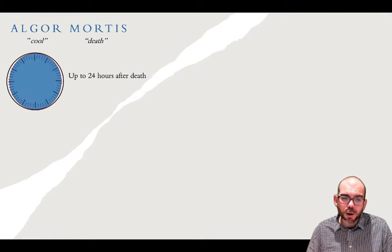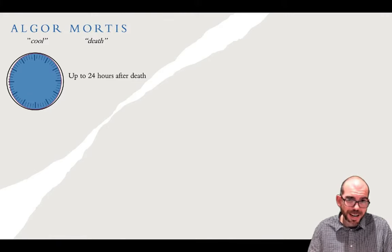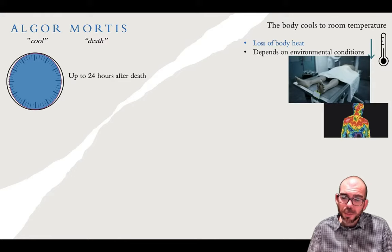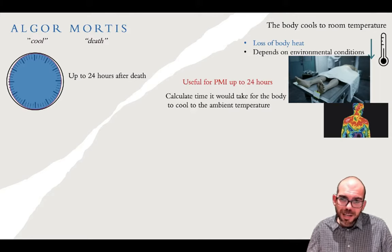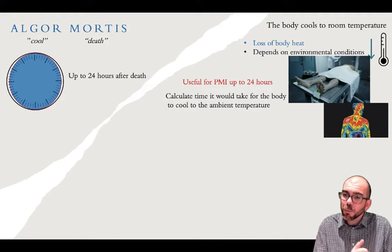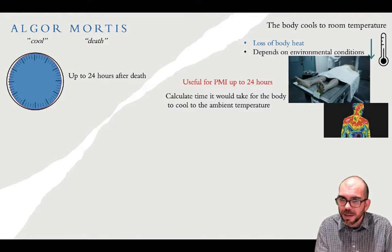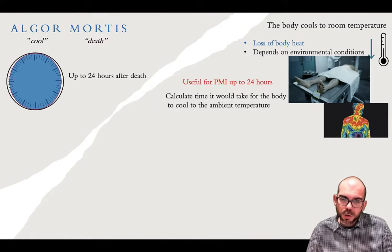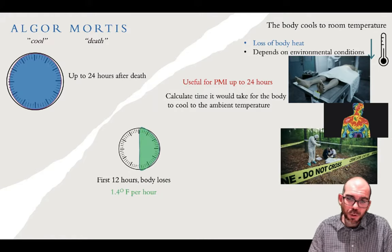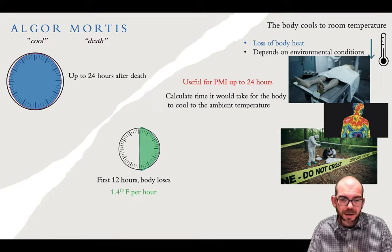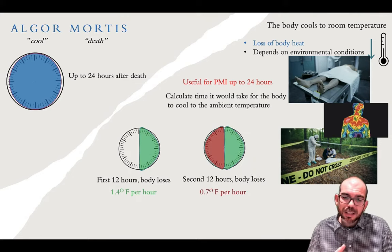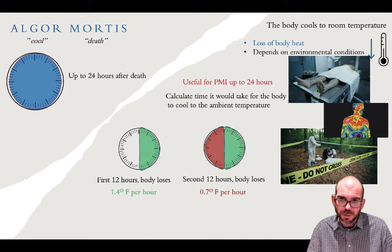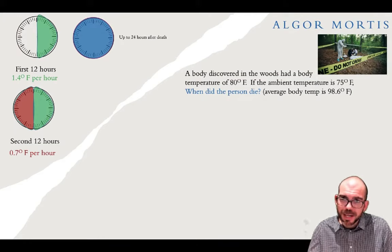The next phase, algor mortis — algor meaning cool — occurs up to 24 hours after death and is much more useful. During algor mortis, the body begins to cool until it reaches ambient temperature. The rate of cooling depends on environmental conditions. For the first 12 hours, the body loses an average of 1.4 degrees Fahrenheit per hour. For the next 12 hours, heat loss slows to about 0.7 degrees Fahrenheit per hour.